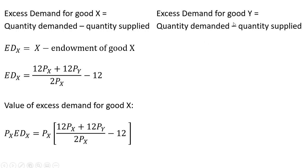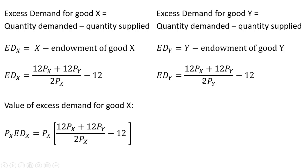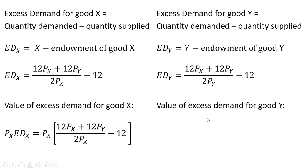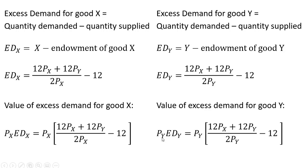Doing a similar thing for good Y, the excess demand for good Y will be our aggregate demand for good Y minus the endowment of good Y. Substituting our aggregate demand for good Y, we get this. Minus 12 comes from consumer one having two units of Y and consumer two having 10. The value of the excess demand for good Y is the price of good Y times excess demand for good Y.